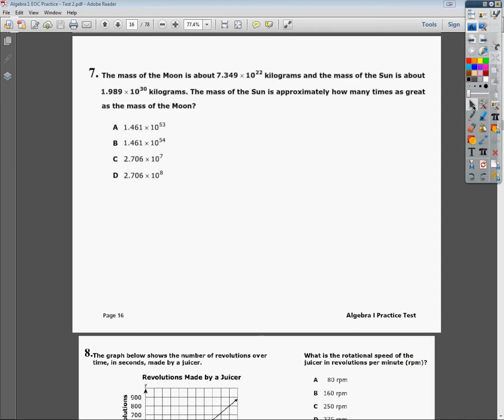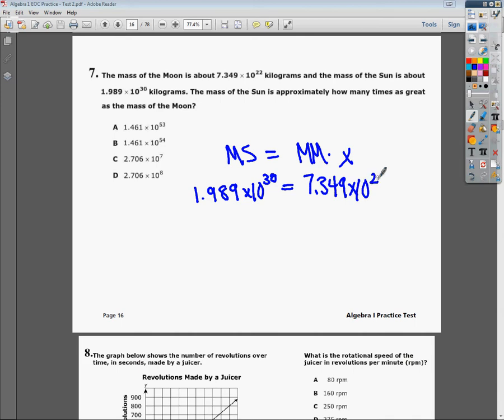Now, the reality is I need to set up the question correctly. It says the mass of the sun, so the mass of the sun, we'll call this ms, is how many times greater than the mass of the moon? So mass of the moon times x. We know the mass of the sun is 1.989 times 10 to the 30th, and we know that the mass of the moon is 7.349 times 10 to the 22nd times x. Now, in order to figure out what x is, I need to divide.